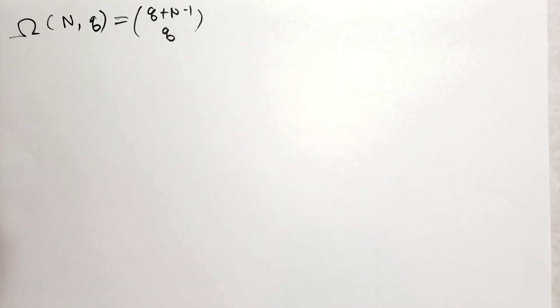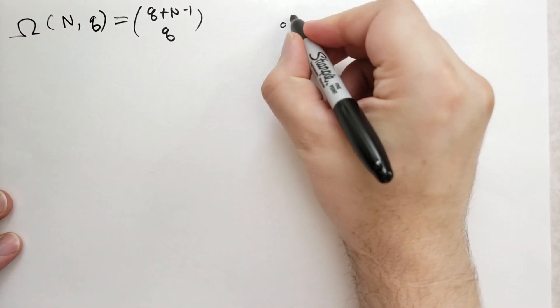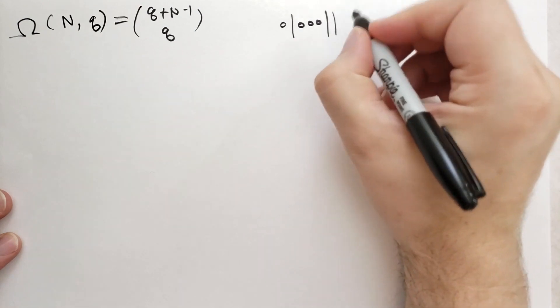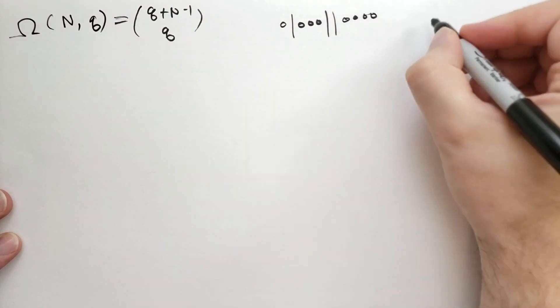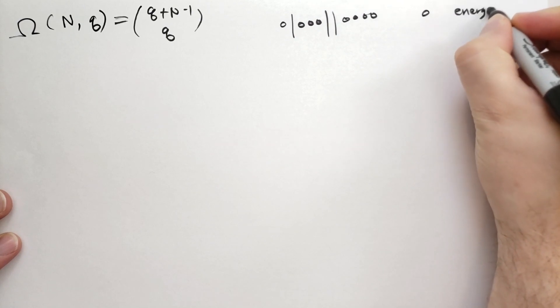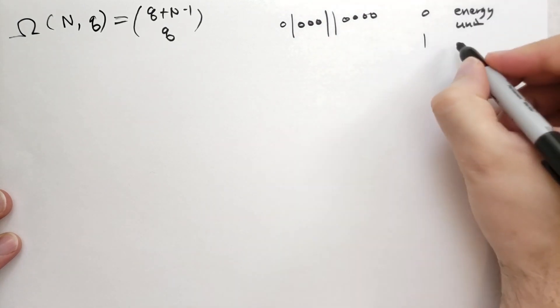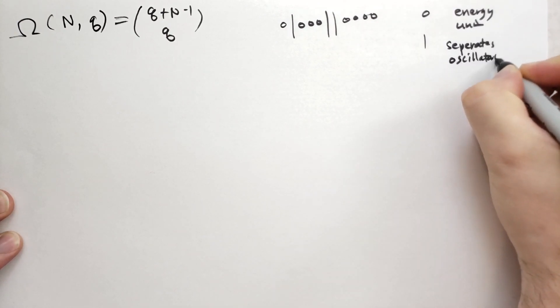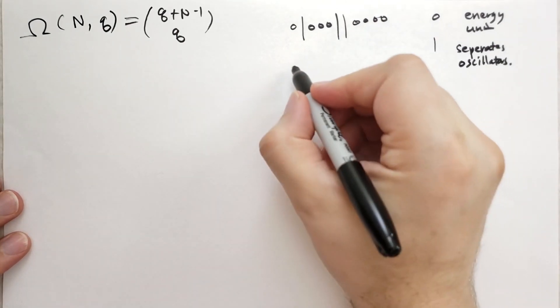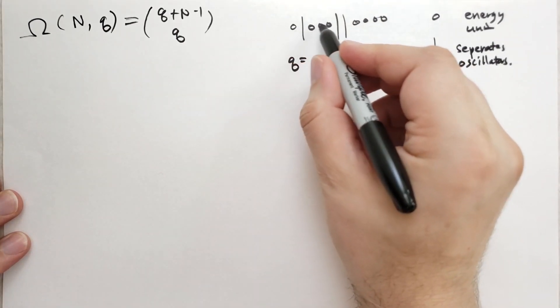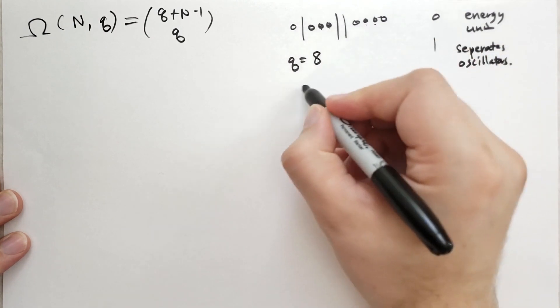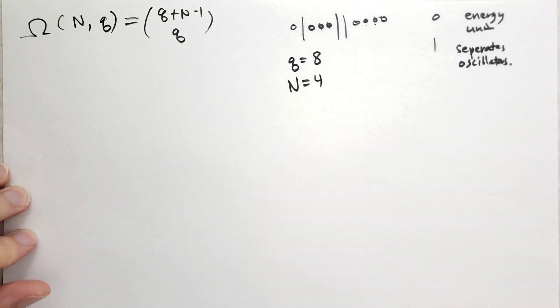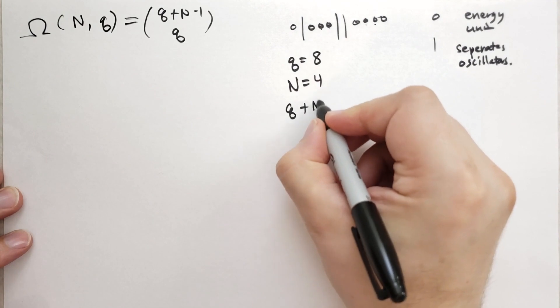So how do we get this? How can we prove this? His proof is pretty simple. Suppose that we were to represent a microstate this way. So he has a circle followed by a slash with three circles, two slashes, and then four circles. These circles represent an energy unit, and the slash separates oscillators. In this particular case, we have Q is equal to eight, and N is one, two, three, four. There's N, four. Which means you have Q plus N minus one symbols.